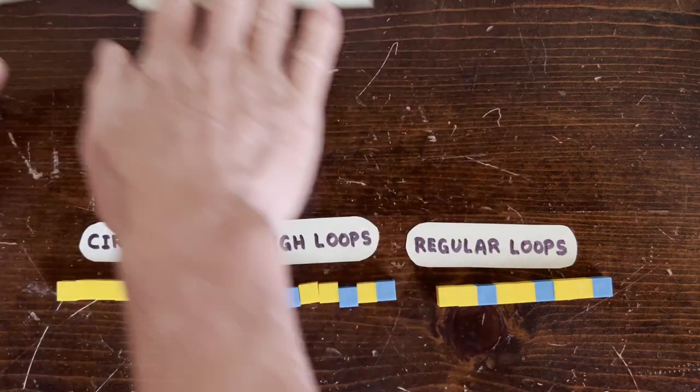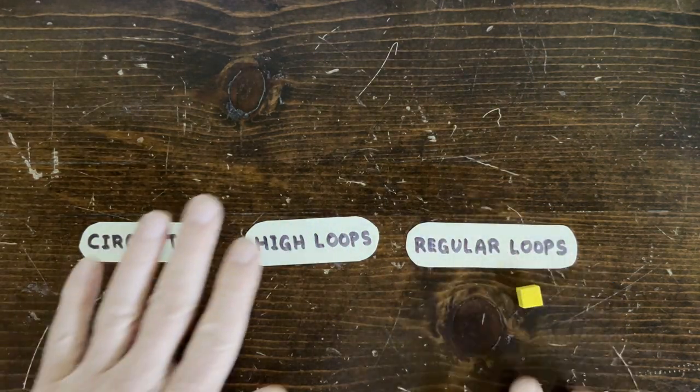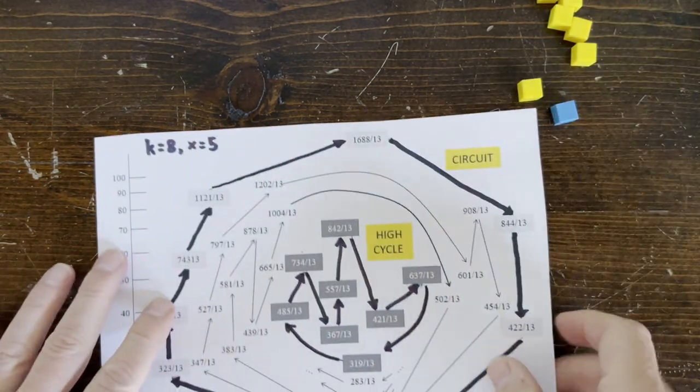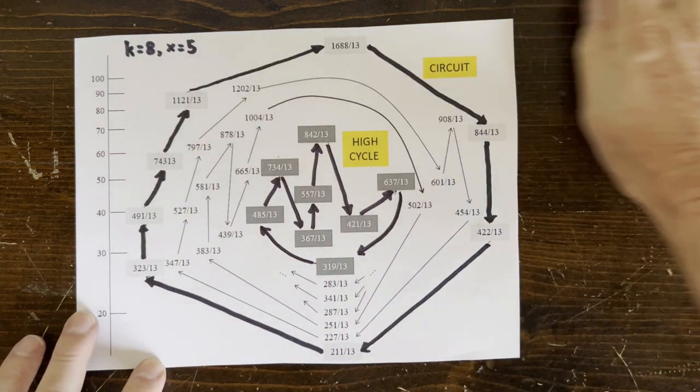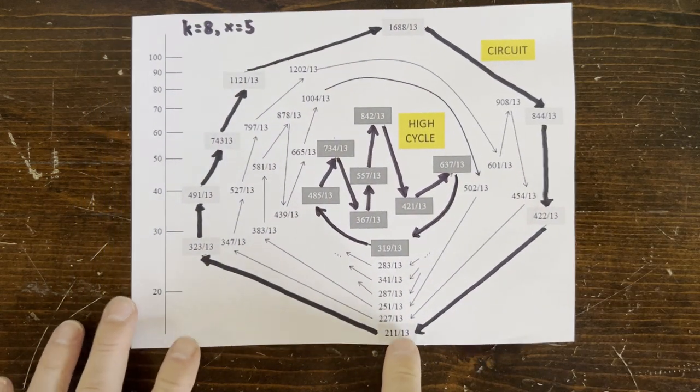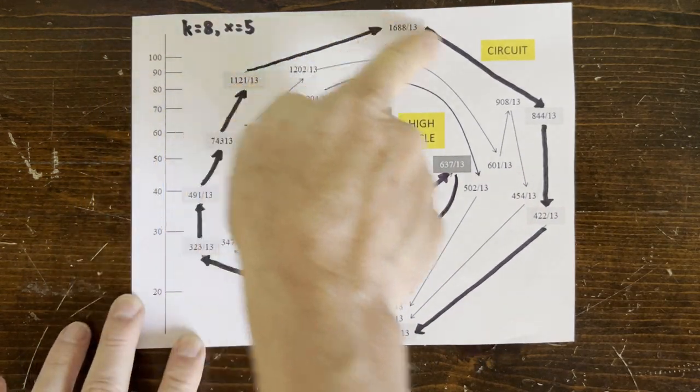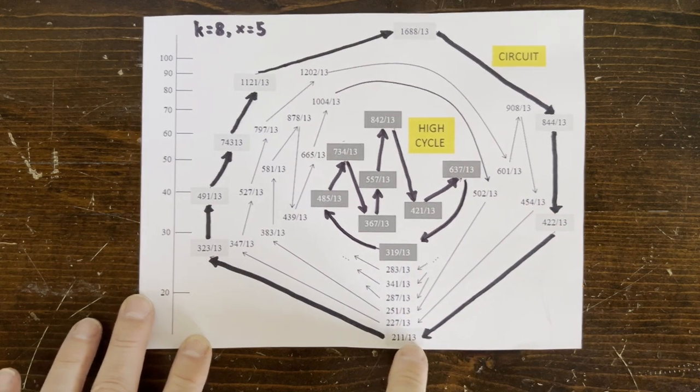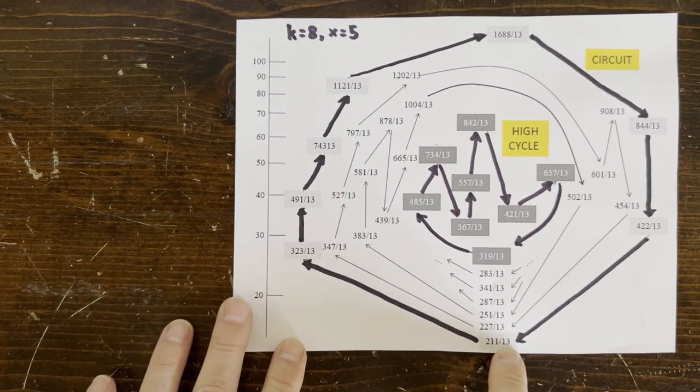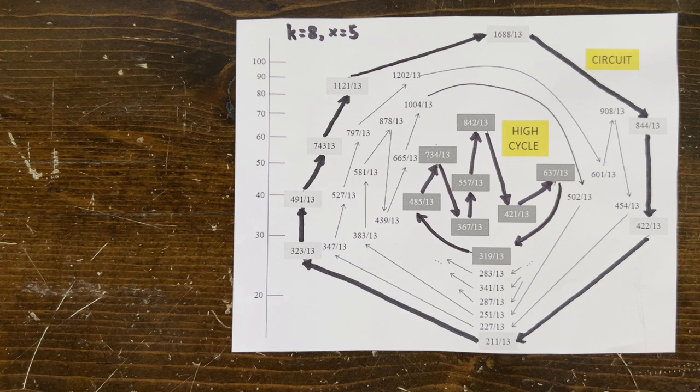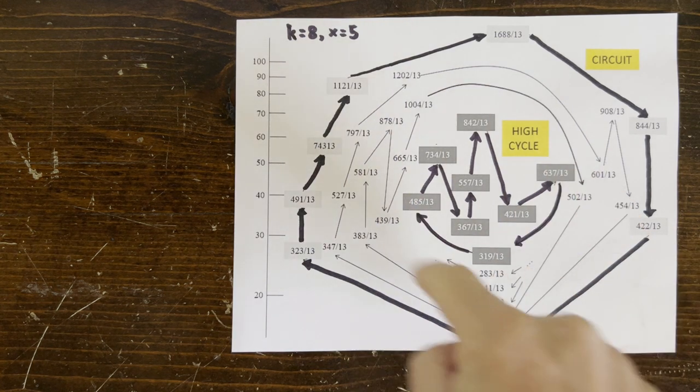Okay, here are all the 3n plus 1 loops of length k equals 8 that have x equals 5 upmoves. For example, there's only one number where if you apply the 3n plus 1 rule to it, you get 5 odds, that's upmoves, followed by 3 evens, that's downmoves, that loops back to itself. And that number is 211 over 13, which is a fraction, and every member of every loop here turns out to be a fraction.